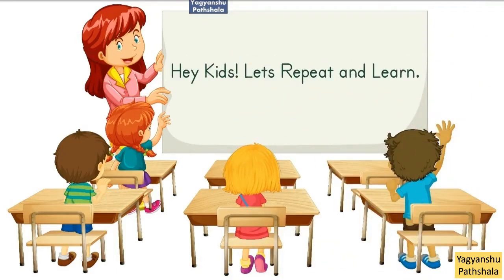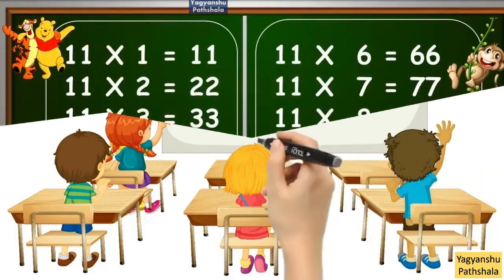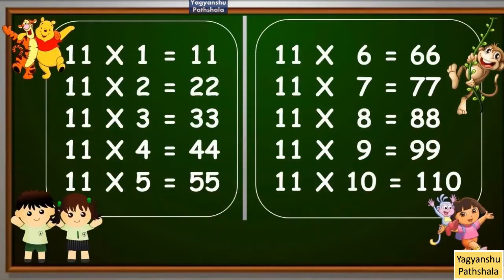Hey Kids, let's repeat and learn. 11 times 1 equals 11. 11 times 2 equals 22. 11 times 3 equals 33. 11 times 4 equals 44. 11 times 5 equals 55. 11 times 6 equals 66. 11 times 7 equals 77. 11 times 8 equals 88. 11 times 9 equals 99. 11 times 10 equals 110.